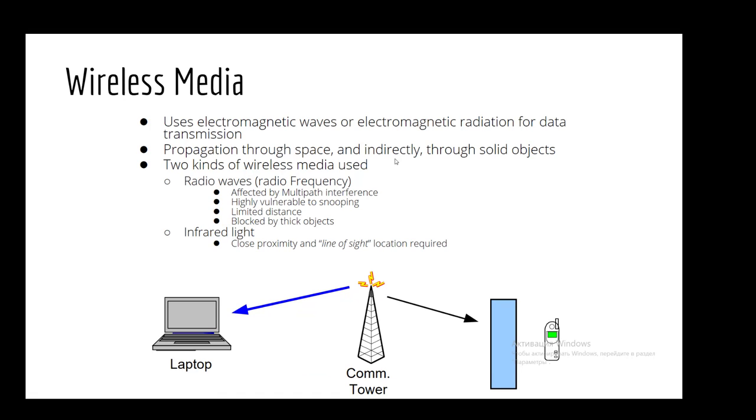Next part, it's wireless media. It has several functions. First one, it uses electromagnetic waves or electromagnetic radiation for data transmission. Second function, propagation through space and indirectly through solid objects. And the last, it's two kinds of wireless media used. Examples of wireless media can be radio waves.